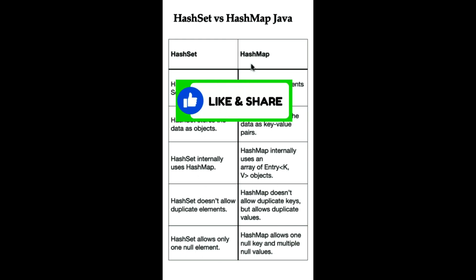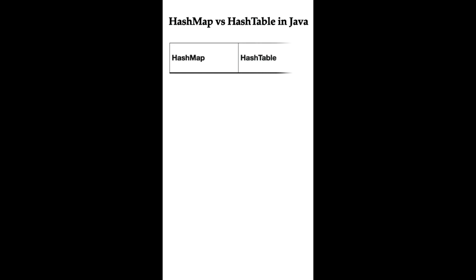What is the difference between HashMap and Hashtable in Java? HashMap is not thread-safe, meaning it cannot be safely used by multiple threads without additional synchronization. Hashtable is thread-safe because it synchronizes each method, making it safe to use by multiple threads without additional synchronization.